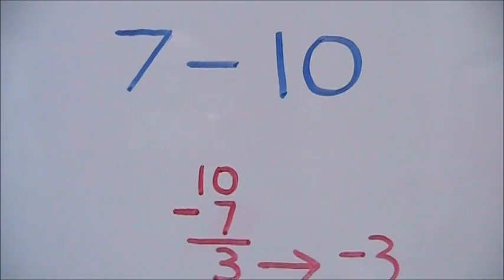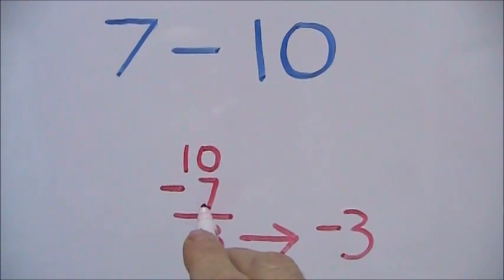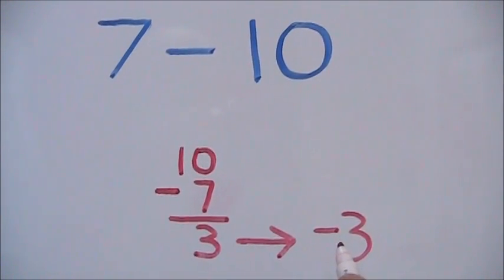To find the difference between 7 and 10, we subtract the smaller number 7 from the larger number 10 to give us 3. We then make our answer negative.